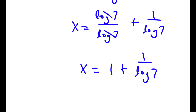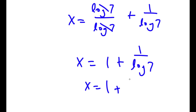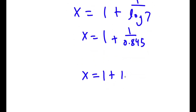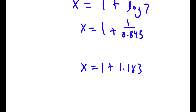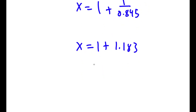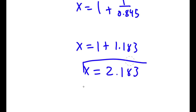Now to get the value of log 7 you can use a calculator. Log 7 is equal to approximately 0.845. So 1 divided by 0.845 is going to equal 1.183. And 1 plus 1.183 is equal to 2.183. So x is equal to 2.183. This is my answer.